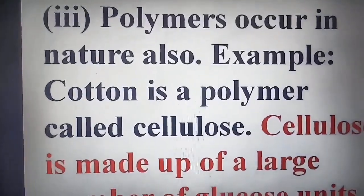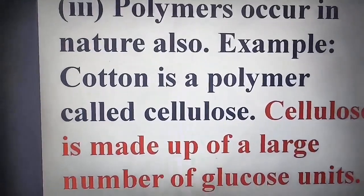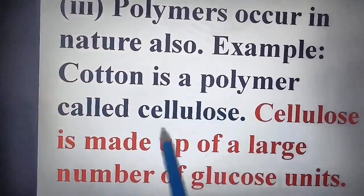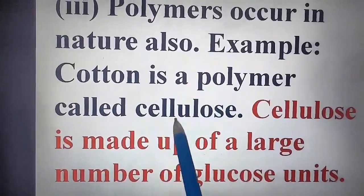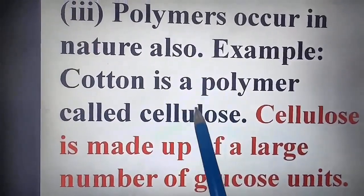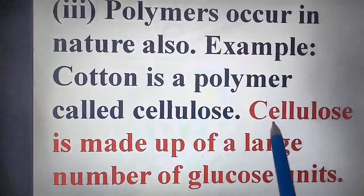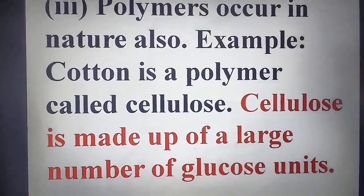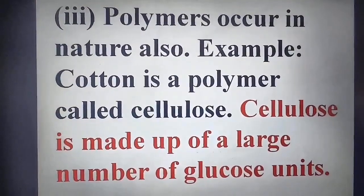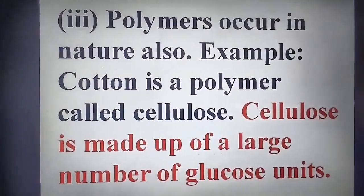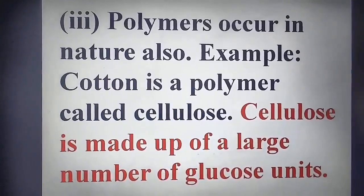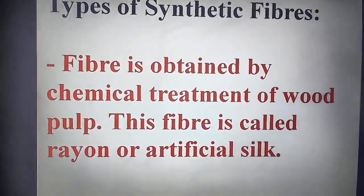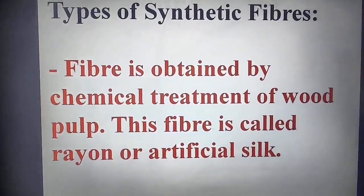Polymers occur in nature also. For example, cotton is a polymer called cellulose. Cellulose is made up of a large number of glucose units, so cellulose is a natural polymer existing in nature because cotton is a natural fiber.